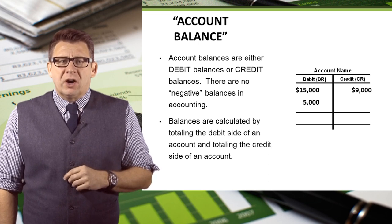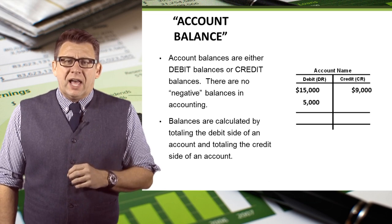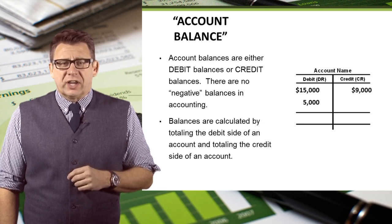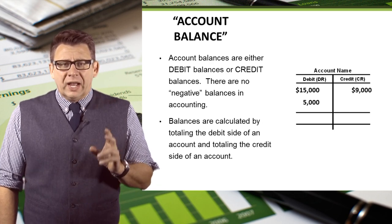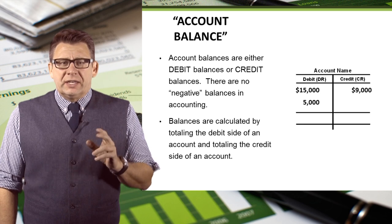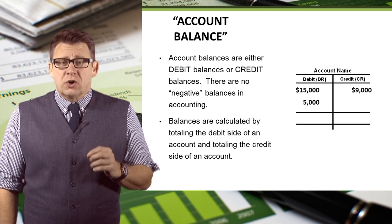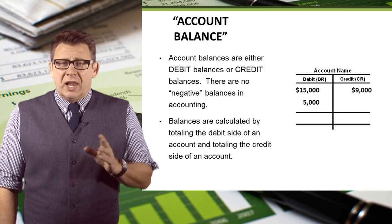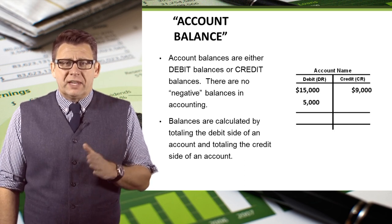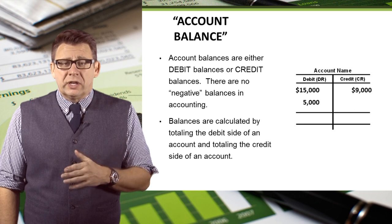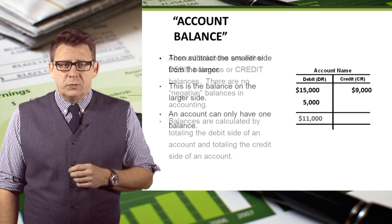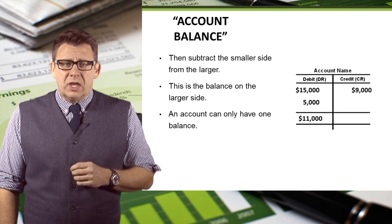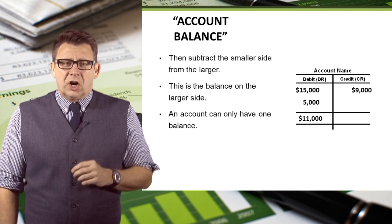Before we look at how to prepare the trial balance, let's revisit how we arrive at the ending balances in our ledger accounts. Account balances are either debit balances or credit balances — there are no negative balances in accounting. Balances are calculated by totaling the debit side of an account and totaling the credit side of an account, then subtracting the smaller side from the larger. This is the balance on the larger side.